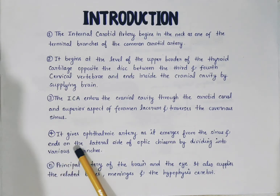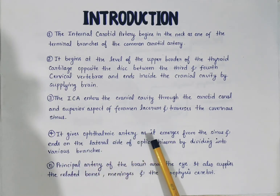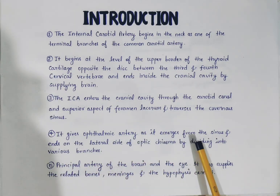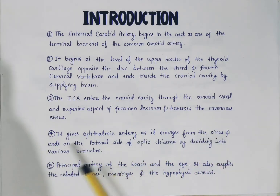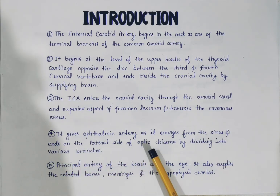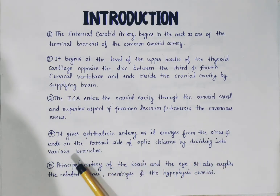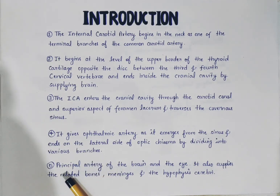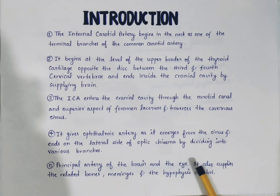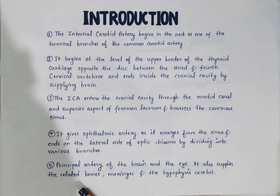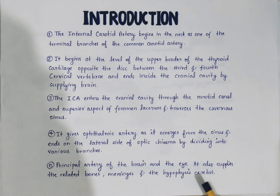It gives off the ophthalmic artery as it emerges from the sinus, and ends on the lateral side of the optic chiasma by dividing into various branches. It is the principal artery of the brain and the eye. It also supplies the related bones, meninges, and the hypophysis cerebri.